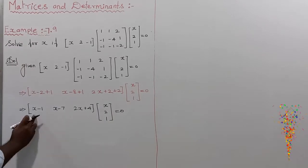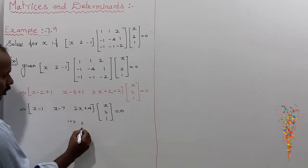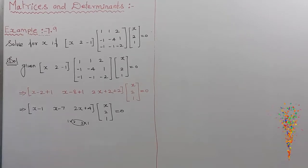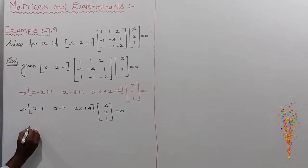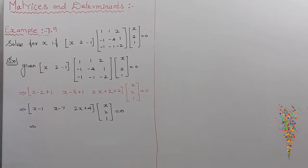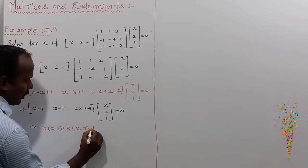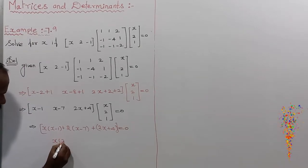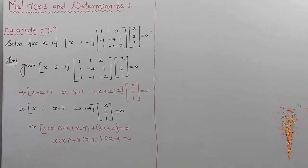This is a 1 row by 3 column matrix multiplied by a 3 row by 1 column matrix, so multiplication exists and we get a 1×1 result. Which implies: x(x - 1) + 2(x - 7) + 1(2x + 4) = 0. Expanding: x² - x + 2x - 14 + 2x + 4 = 0.